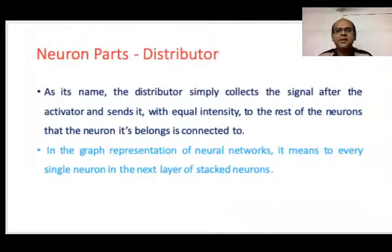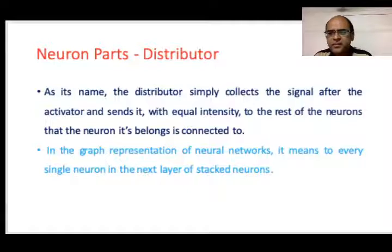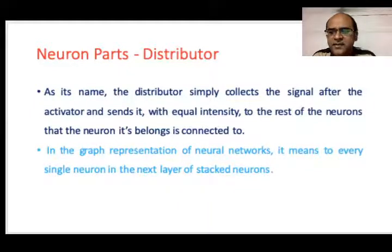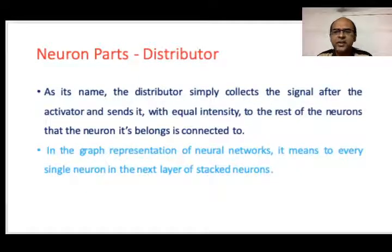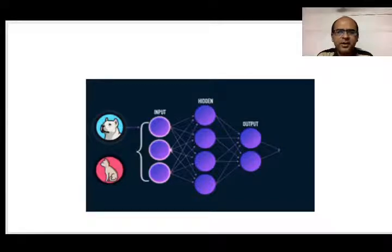The distributor is another important part of a neuron. As the name indicates, a distributor collects the signal after the activator and sends it with equal intensity to the rest of the neurons — to every single neuron in the next layer of stacked neurons. So the input might be a dog and a cat that goes as input, then you have hidden layers, then output layers.